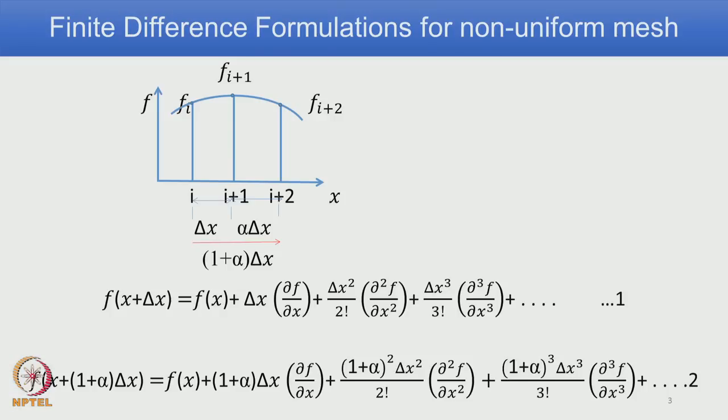This is necessary in the sense that you do not always have the option of getting a uniform mesh throughout the domain. You want to have a finer mesh at some locations and a coarser mesh at other locations. So in such a situation, you need to have a formula derived based on a non-uniform spacing mesh.